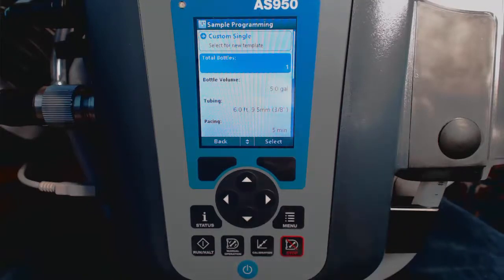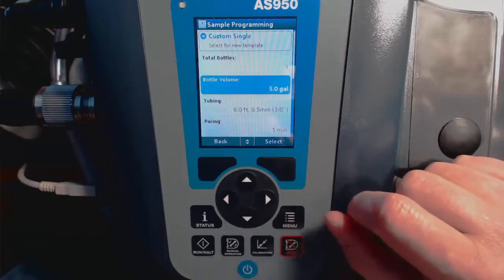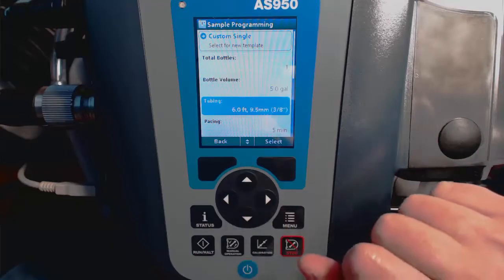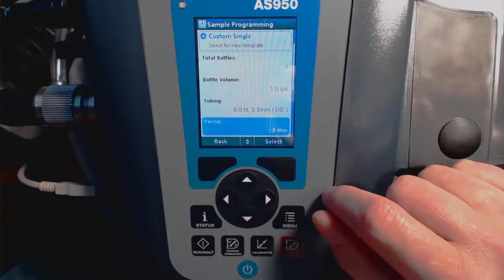Now we'll select the number of bottles, the bottle volume, the tubing length and diameter, and here is the pacing.